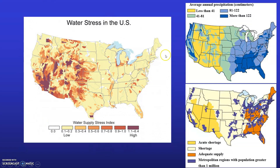This map depicts water stress in the United States, where competing demands for water create stress in local and regional watersheds. The map shows the water supply stress index for the US. The country is pretty much divided in two — the west faces a higher level of water stress compared to the east side of the US, which has a very low index for water stress.